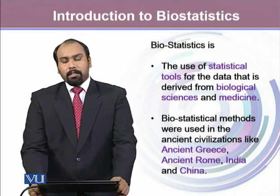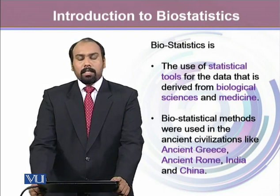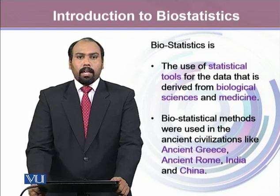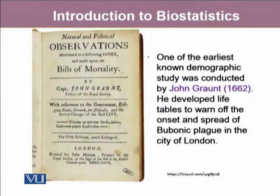Biostatistics methods were used in older civilizations like in ancient Greece, ancient Rome, India, and China. One of the earliest known demographic studies was conducted by Sir John Graunt in 1662, where he developed some life tables to study the spread of bubonic plague in the city of London. He wrote his articles as the Natural and Political Observations on the Bills of Mortality.